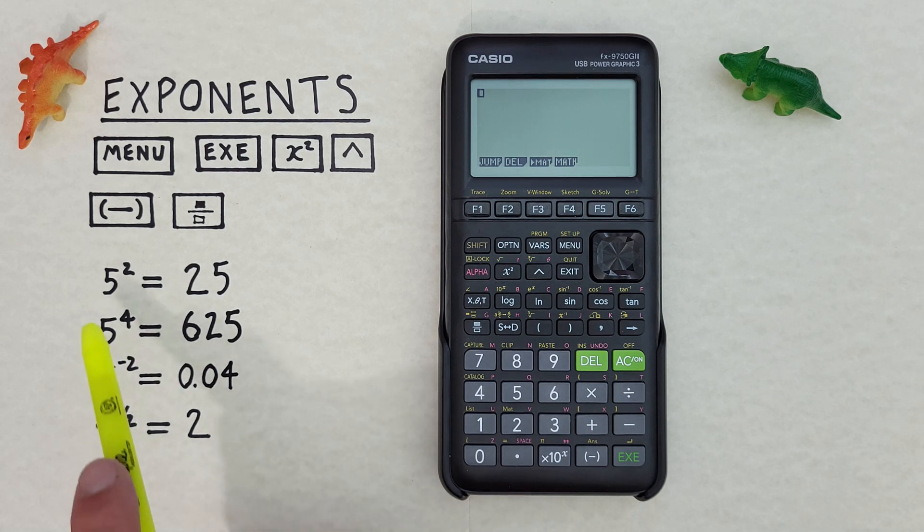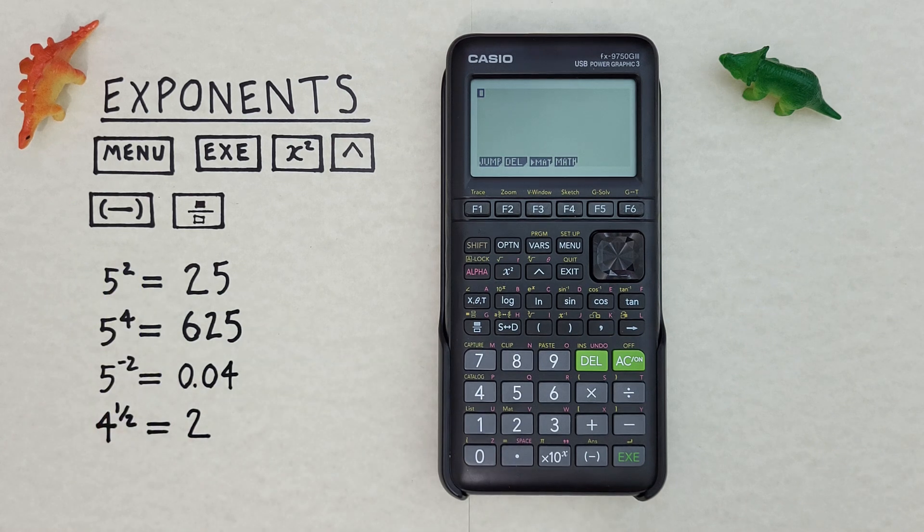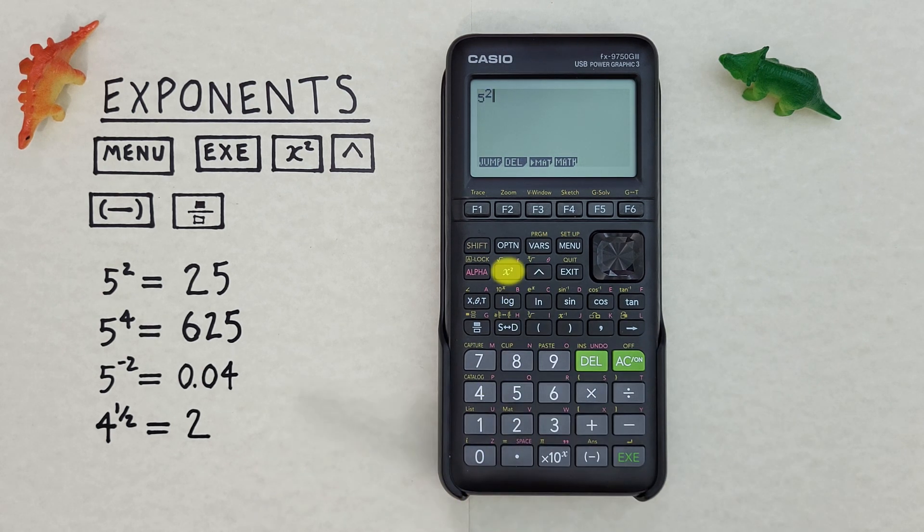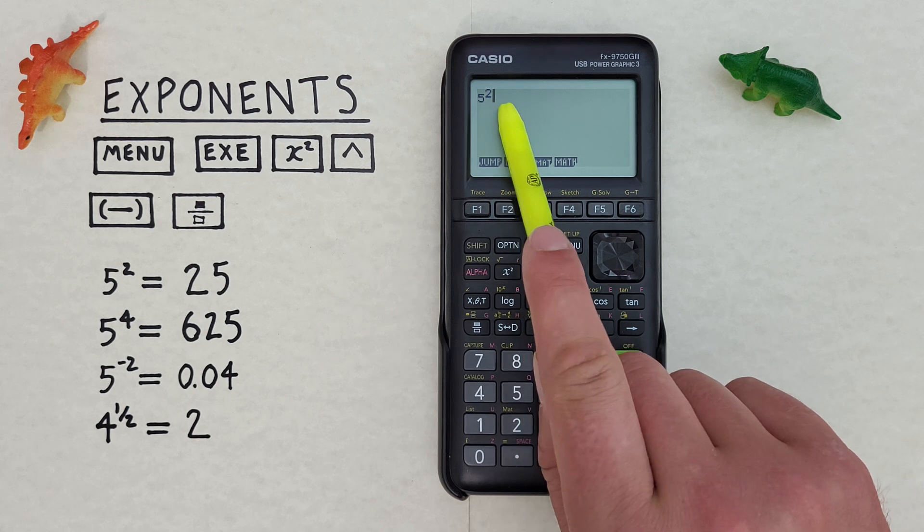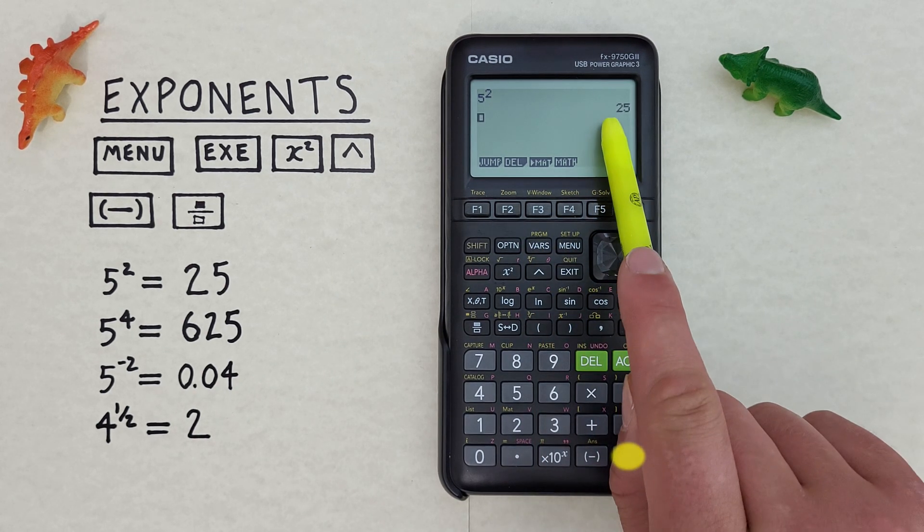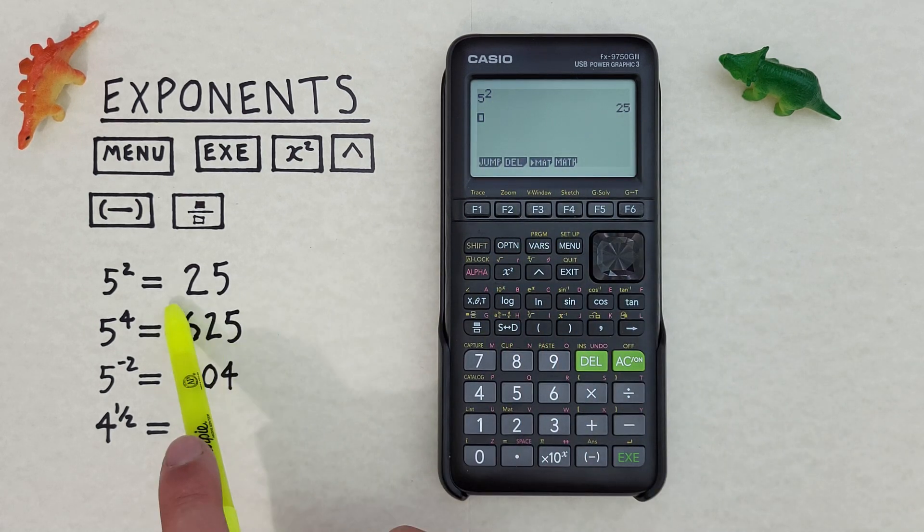Let's say we wanted to find 5 squared, or 5 to the power of 2. To do that, first we enter our 5, and then we press the x squared key. That puts a 2 in our exponent position, and if we press exe, we get the result of 25. So 5 squared is equal to 25, which is correct.